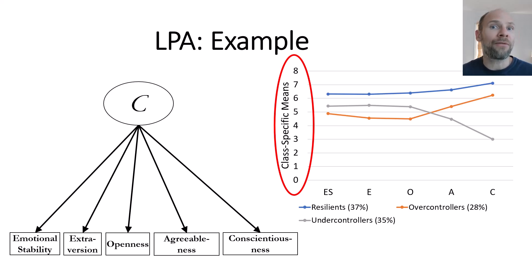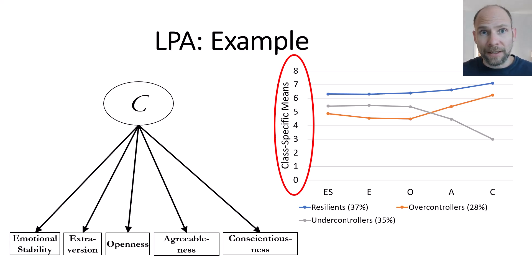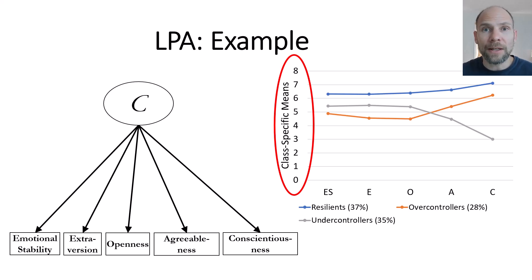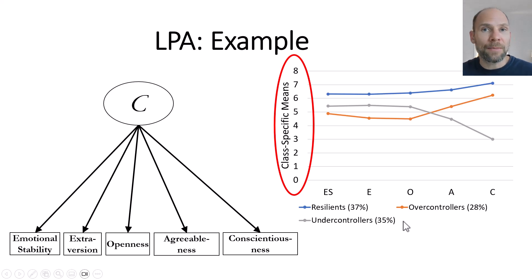So we have profiles of means, depicted in a profile plot as you can see here. Means are not the only thing modeled in latent profile analysis — we can also model the variance-covariance structure when we have continuous variables. However, the main focus of a latent profile analysis is typically on the class-specific means. What is also estimated are the class sizes, which parallels what is done in classical latent class analysis — the class proportion or class size parameter.